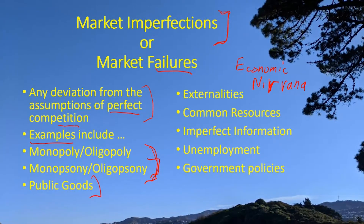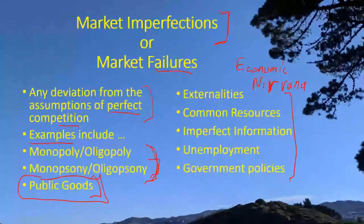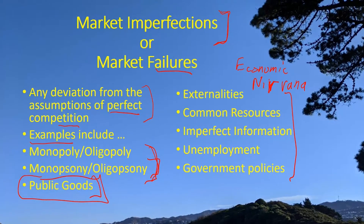Next, we're going to talk about public goods. Public goods are another area where the market doesn't work perfectly. This public goods argument becomes one of the really strong arguments in support of government intervention in the economic system. Over the next few lectures, we'll also talk about externality effects and common resources — additional reasons why markets can fail and generate outcomes that are not the best for everybody.